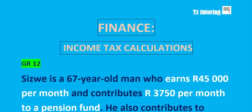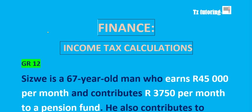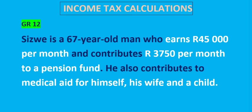Welcome to Income Tax Calculations. Let's get to the scenario that's been given. We have Sizwe. Sizwe is a 67-year-old man. He earns 45,000 per month. He contributes 3,750 per month to a pension fund. He also contributes to a medical aid for himself, his wife, and a child.